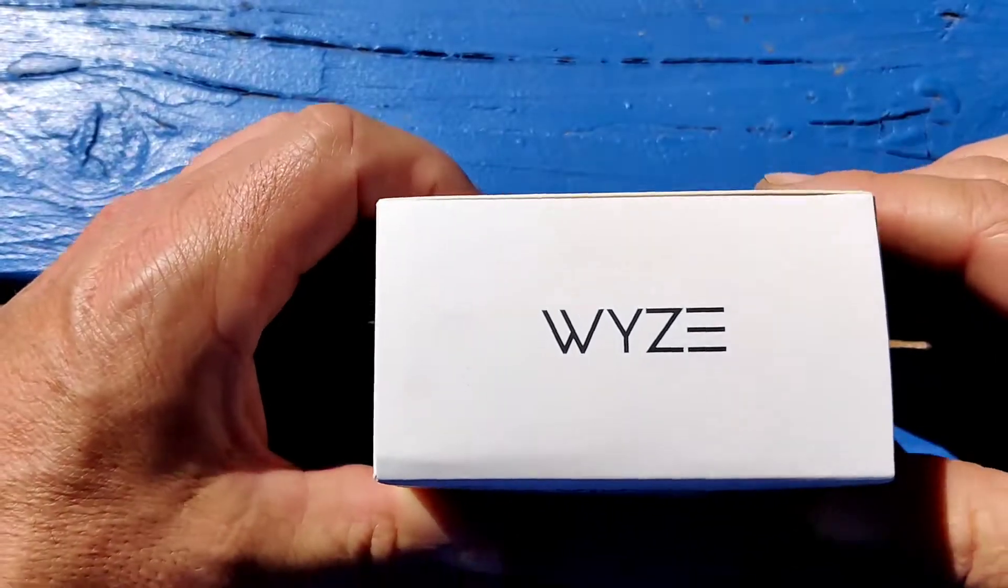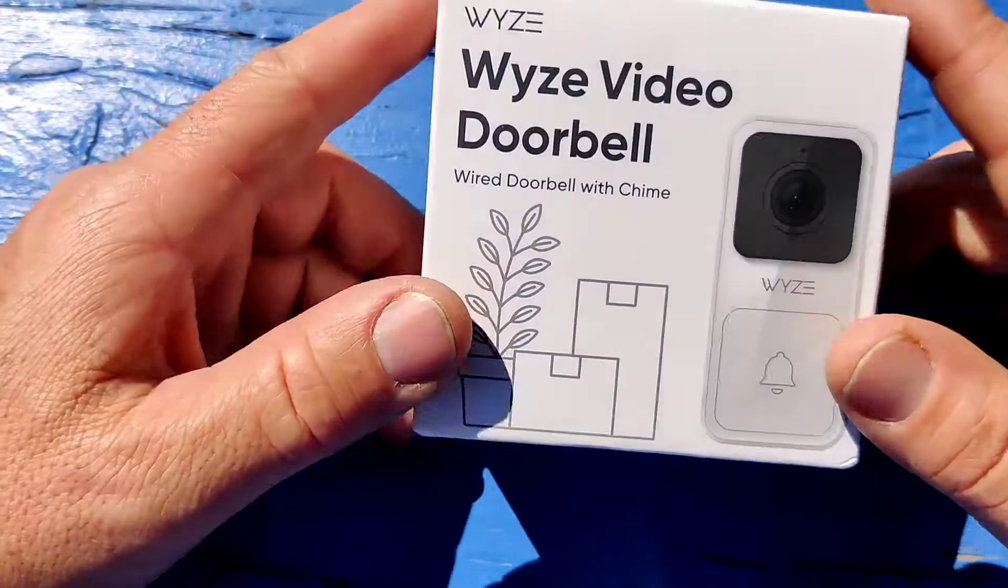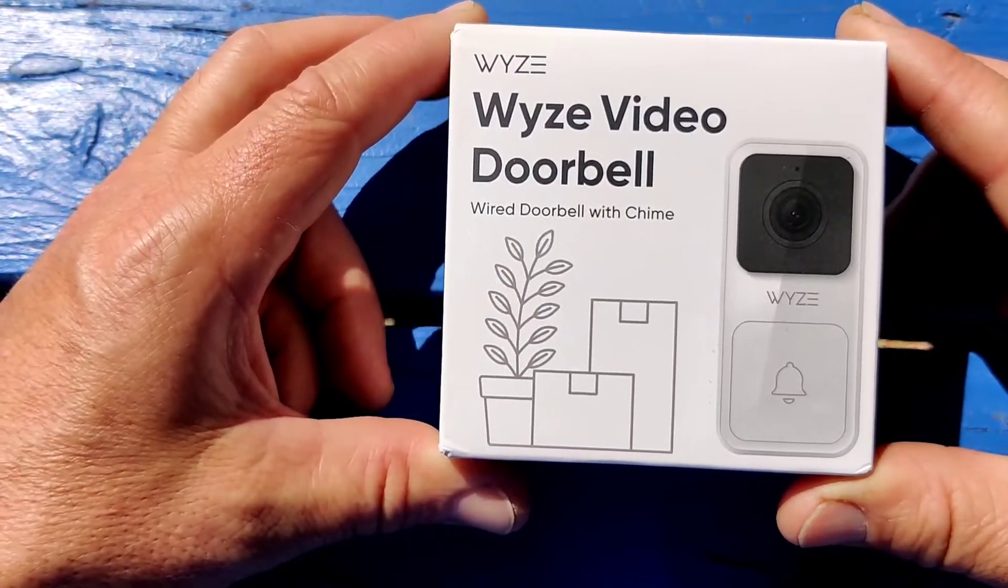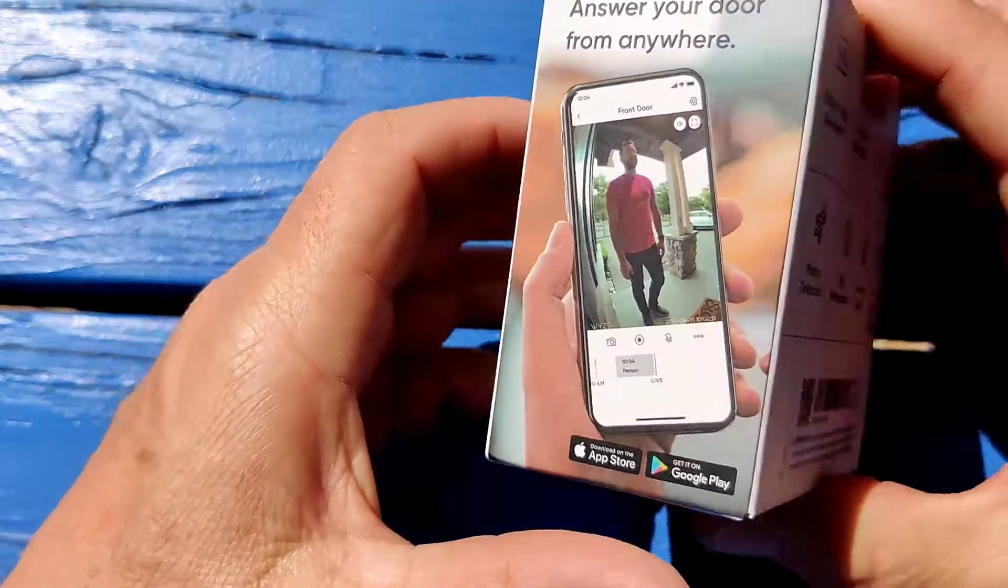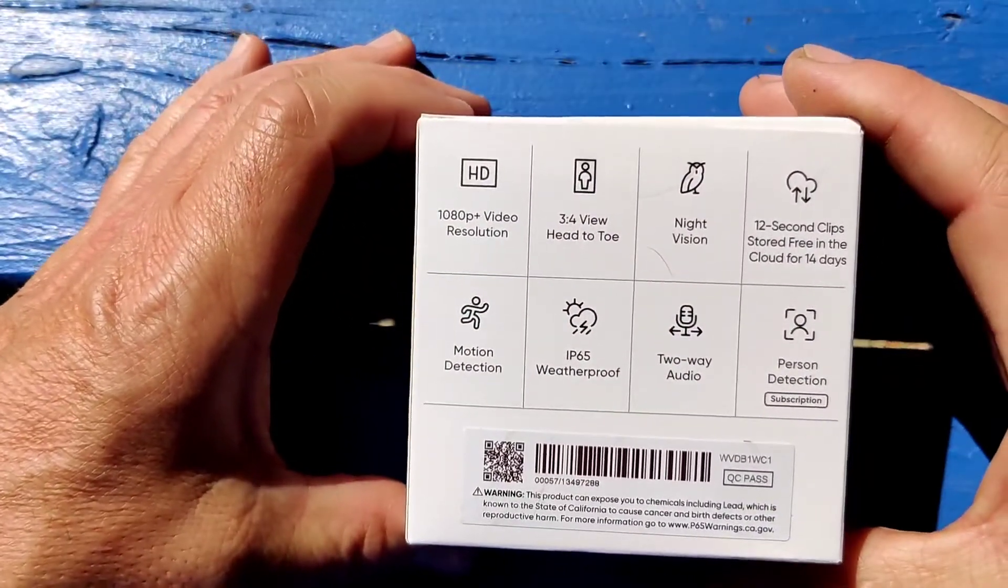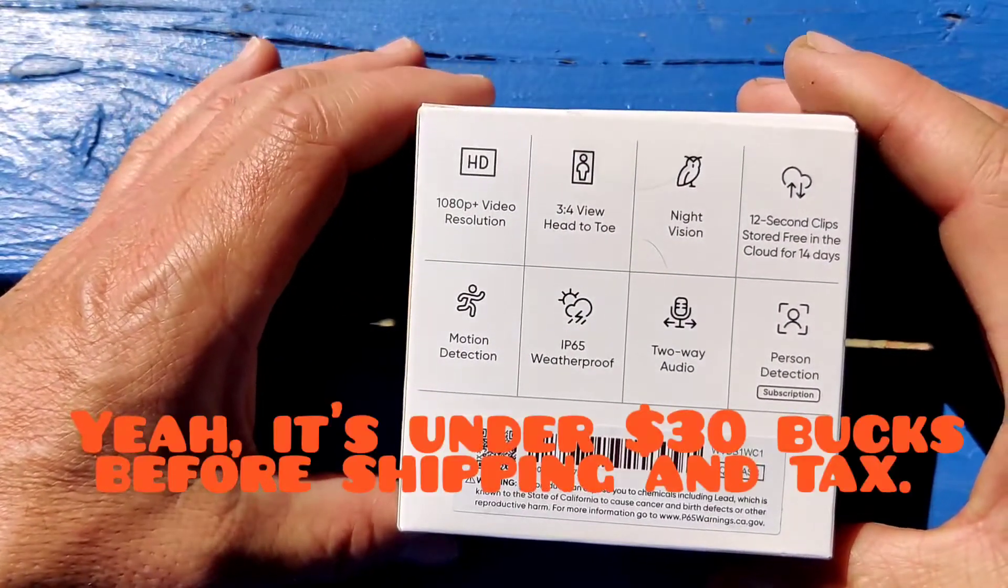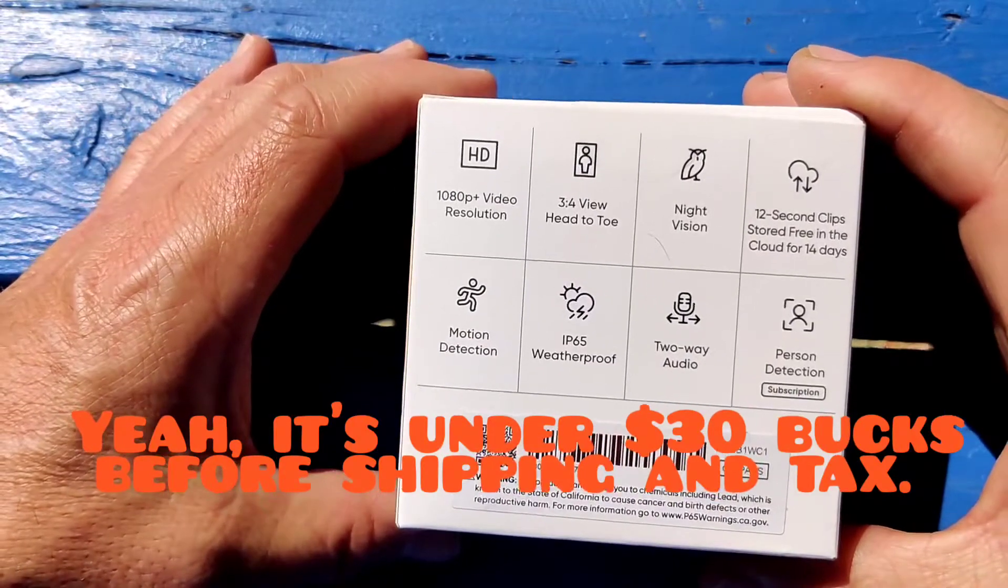So here it is, a Wyze video doorbell wired doorbell and chime. Main features, besides the price of $29.99 plus tax, is 1080p video resolution.